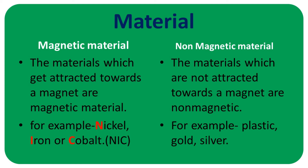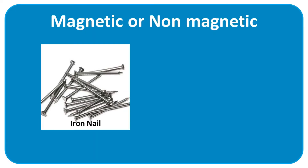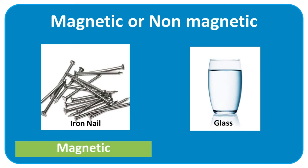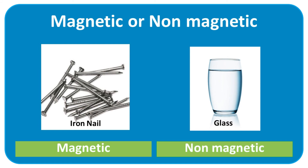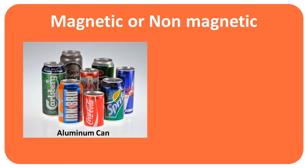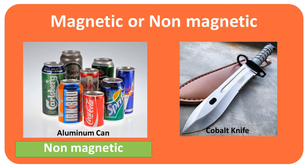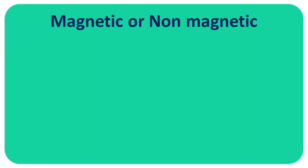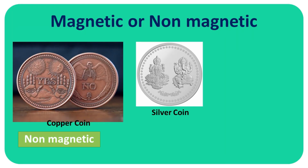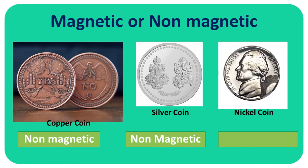Now let me ask you some questions. Is an iron nail magnetic or non-magnetic? Magnetic. Is glass magnetic or non-magnetic? Non-magnetic. Is an aluminium can magnetic or non-magnetic? Non-magnetic. Is a cobalt knife magnetic or non-magnetic? Magnetic. Are a copper coin and silver coin magnetic or non-magnetic? Non-magnetic. And a nickel coin is magnetic.